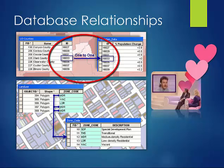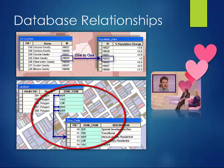Database relationships come in four main types. One-to-one database relationships is where one record in a database corresponds with one record in another database — it's a very simple relationship. We also have one-to-many relationships, where one record in a database corresponds to more than one record in a table. An example of this is properties and property owners, where owners could own more than one property — this would be a one-to-many relationship.